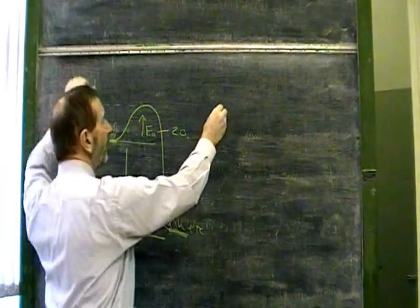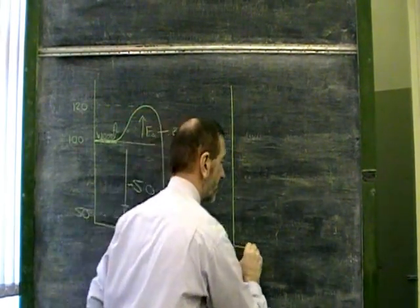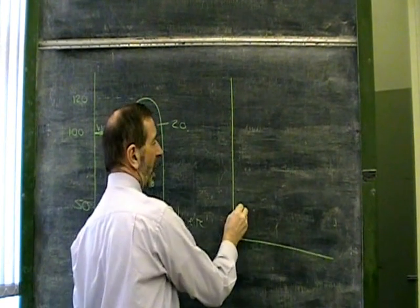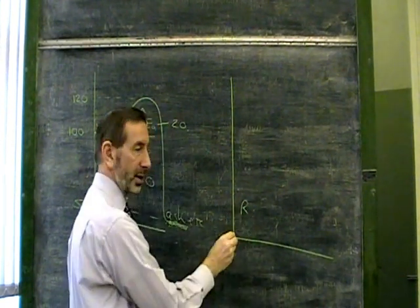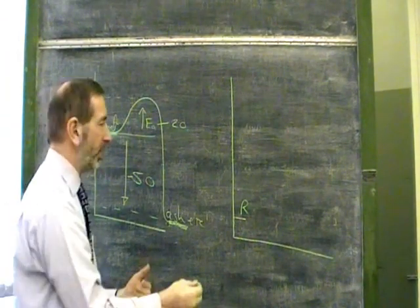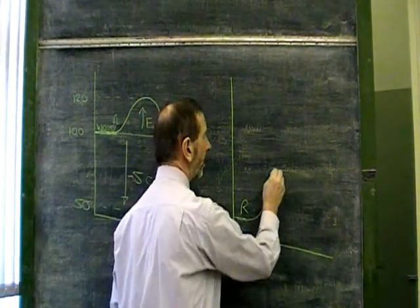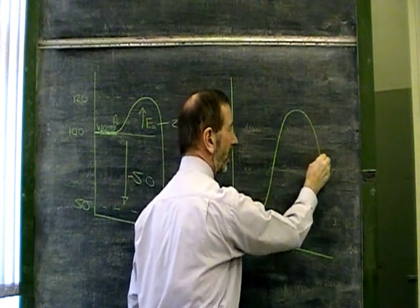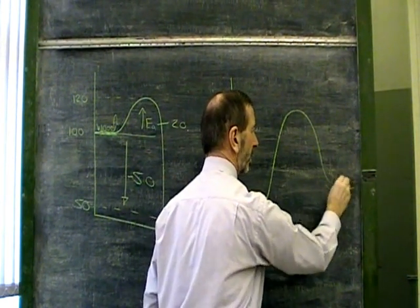If we're looking at an endothermic reaction, of course things are the other way around. We start with our reactants. Again, we have to kick start the reaction, we have to put energy in to get it going. And only when we get to the top of the hill, then we can come down the other side and end up with our products.